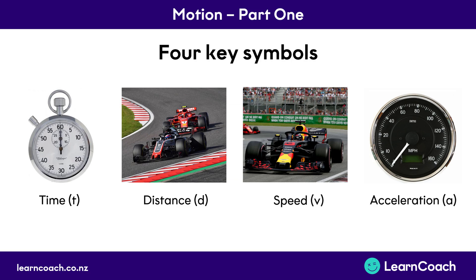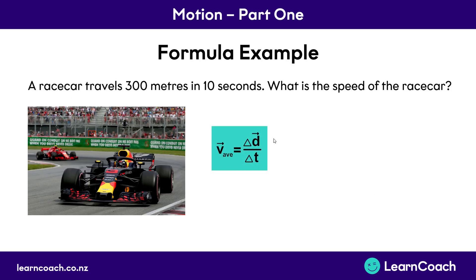For each of these key concepts, they are represented by a symbol. And these symbols are really important because they're used in all the motion physics formulas to relate the concepts together. For example, a small t stands for time, the small d stands for distance, v stands for speed, and a for acceleration. And these are important because they go in formulas like this one here. So in a physics test you'll be given these formulas, but they're absolutely useless if you don't know what the letters mean.